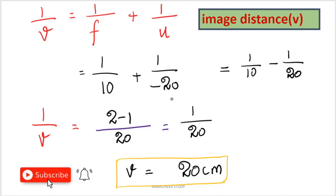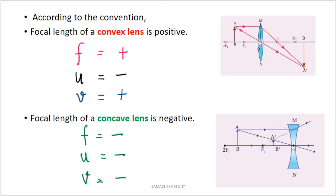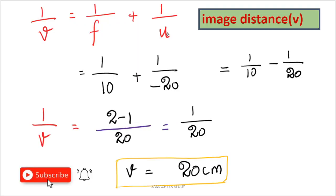The object distance u is minus 20 because, by sign convention, the object is placed on the opposite side of the optical center. So: 1 by v equals 1 by 10 minus 1 by 20, which gives 1 by v equals 1 divided by 20. Therefore v equals 20 centimeters, and v is positive.